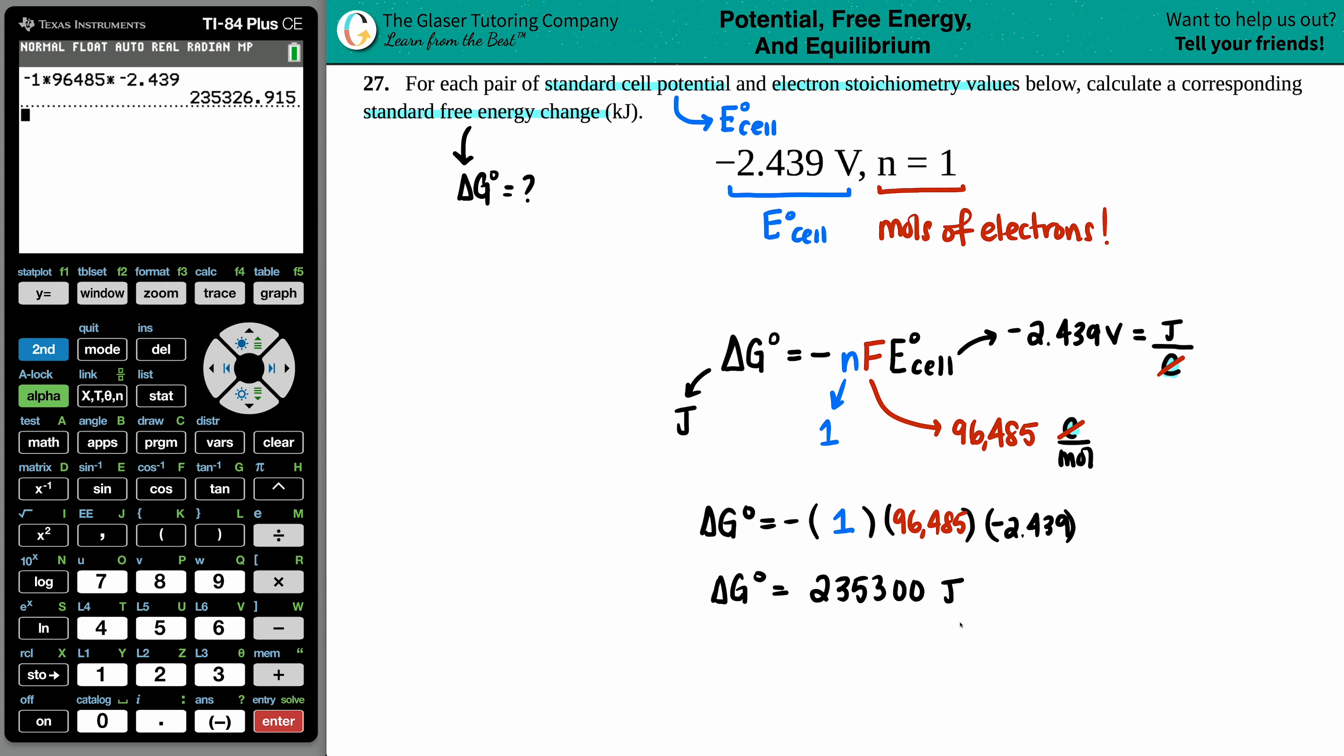But they want it in kilojoules. That's okay. So to go from joules to kilojoules, we just divide by 1,000. Similarly, just take the decimal, move it to the left three spots. So my new delta G value would be 235.3, and that is in kilojoules final answer. We are done with this problem. What'd you think?